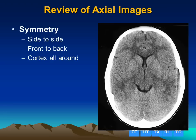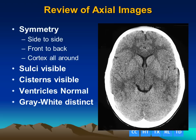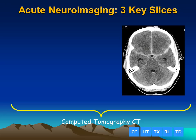If we review the axial images, we want to compare them from side to side and front to back, and look for the cortex all the way around. We want to make sure that the sulci are visible, the cisterns are visible, the ventricles are normal, and that we can see the gray-white matter distinction. We can also look at the skull and scalp for signs of trauma.